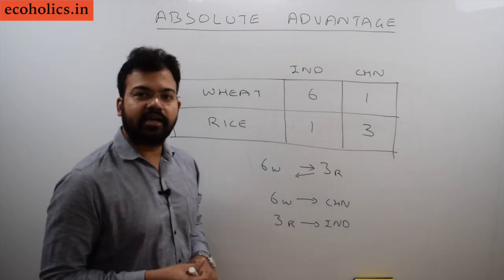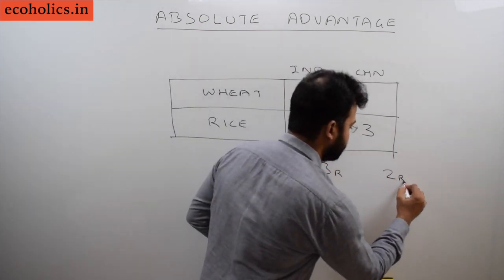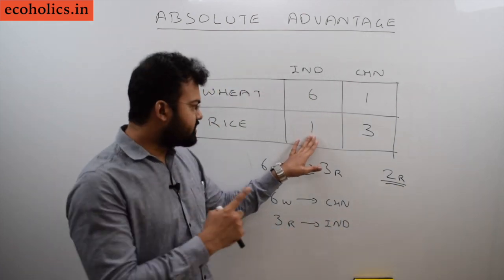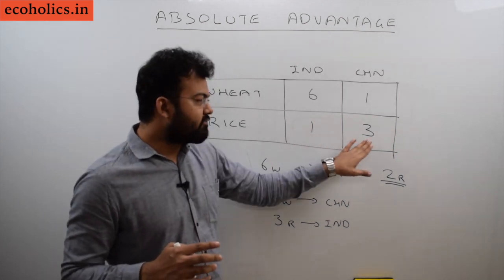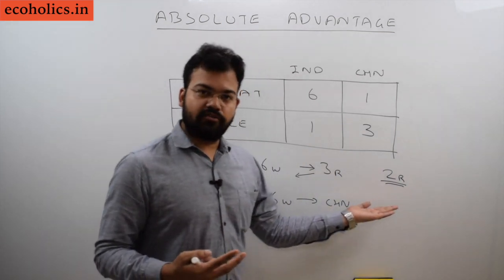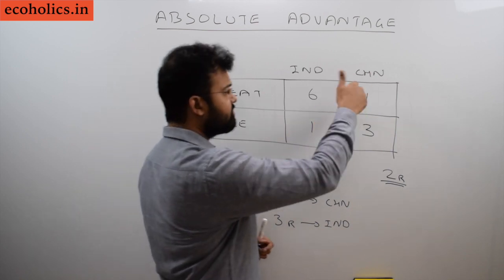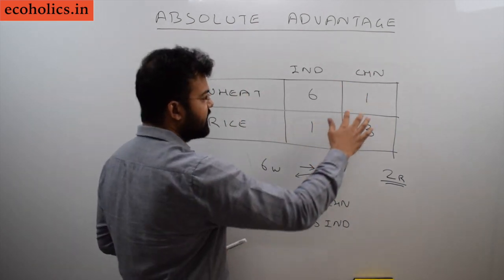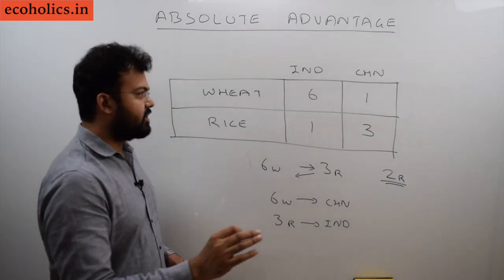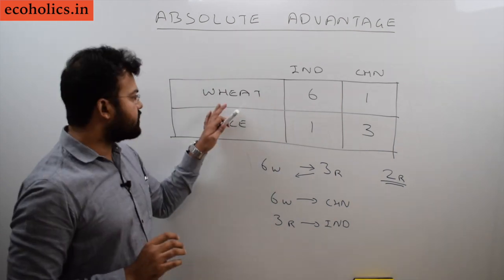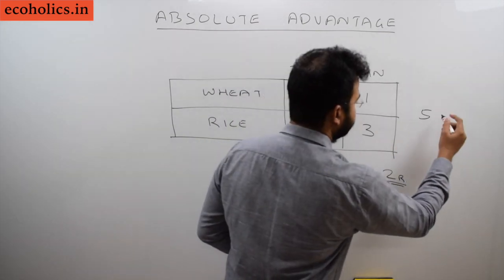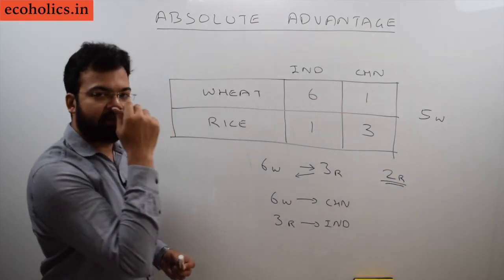What is the benefit for India? India can only produce one kg of rice per labor hour domestically, but after importing it is getting three kg — so the gain is two extra kg of rice. From China's perspective, China can produce only one kg of wheat per labor hour domestically, but through trade it receives six kg — a gain of five kg of wheat.